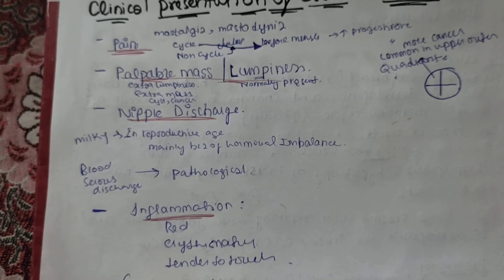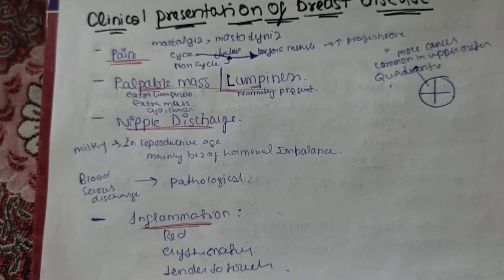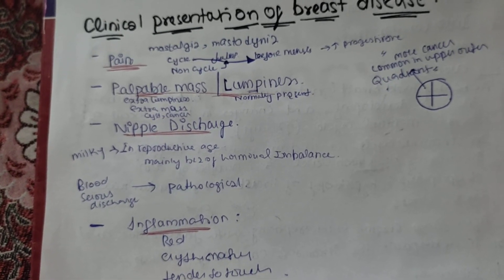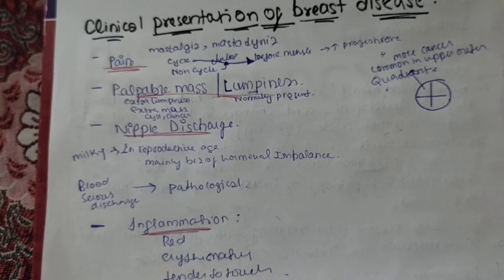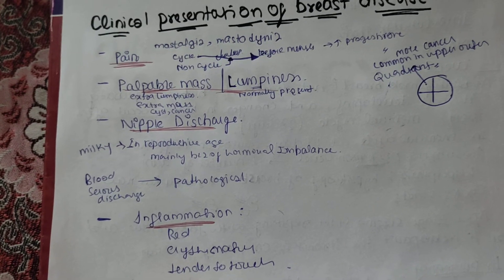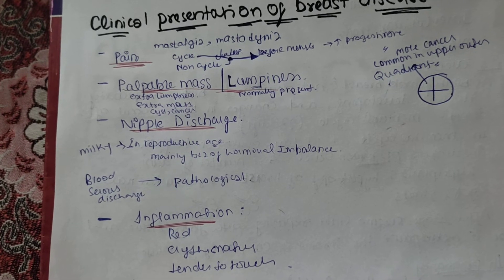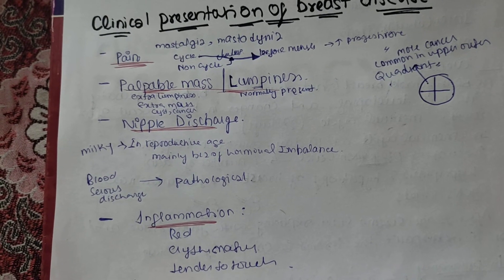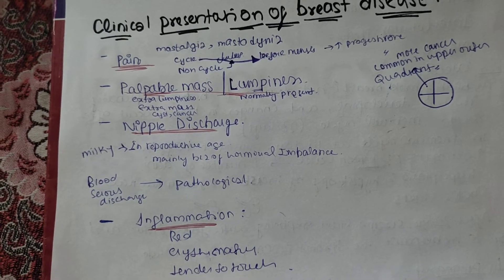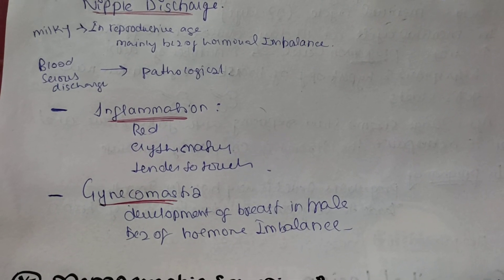Regarding discharge: if the female is in reproductive age and there is a hormonal imbalance, there could be a milky discharge from the breast. Similarly, if the female is pregnant or breastfeeding, milky discharge is very normal and is due to hormonal changes. Apart from that, there is also bloody discharge and serous discharge from the breast, which are very alarming signs and you should consult your doctor, as these can lead to very serious pathology.